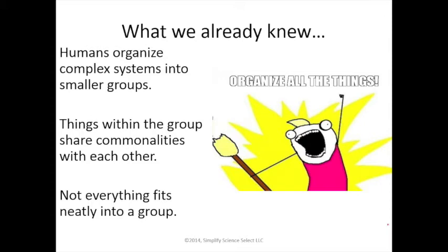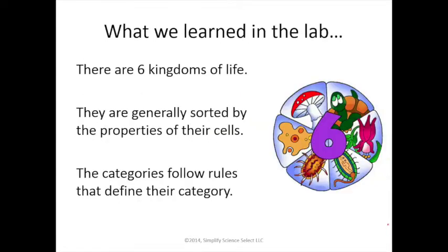We already knew that humans love to organize complex systems into smaller groups. We like to take a lot of things and put them into smaller boxes so they're easier to deal with. The things within those groups share commonalities. Unfortunately, not everything fits neatly into a group, and sometimes we have to put something somewhere that's close enough. In the lab we had an example of trying to sort things together. We now know that there are six kingdoms of life.